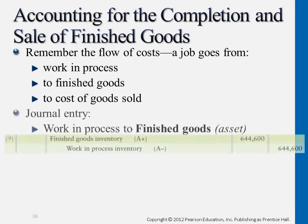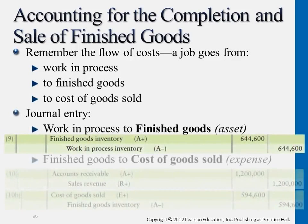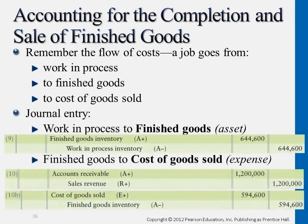So first of all, when it becomes finished goods, assuming the total cost is $644,600 after calculating and measuring the cost of the completed goods — of these three categories of cost, the actual cost incurred that turns into finished goods costs that much, and we transfer it over to the finished goods inventory account.